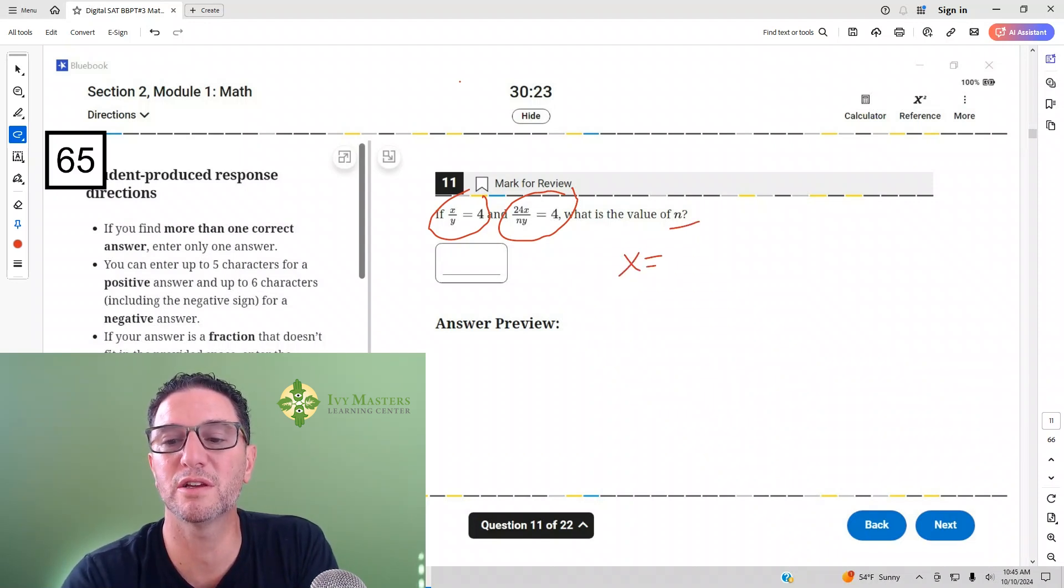Well, if x over y equals 4, the easiest thing to do is to pick 4 for x and 1 for y, because then x over y equals 4 (4 over 1 equals 4). And then plug this into Desmos.